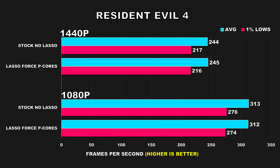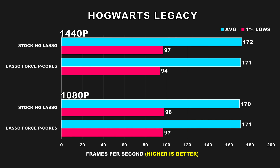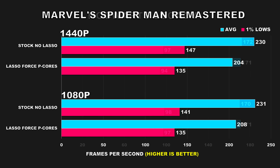Next on our list is Resident Evil 4 Remake. Interestingly, this game shows no changes in performance at either resolution when using Process Lasso. A similar trend is observed with Baldur's Gate 3 — the gaming experience remains virtually identical regardless of whether Process Lasso is enabled or not. Hogwarts Legacy follows suit, performing consistently with or without Process Lasso. While we don't see any performance regression, there's also no noticeable improvement, so for these games we're looking at completely neutral results.